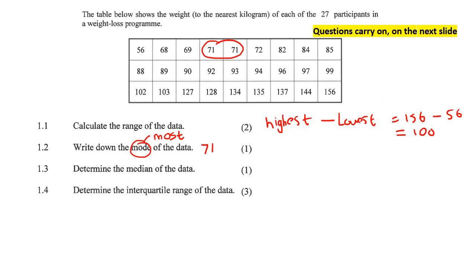Determine the median. The formula for median is n plus 1 over 2. So how many people are there? There are 27 people. So we'll say 27 plus 1 over 2, which is 28 over 2, which is 14. That's not the answer. That is the position.